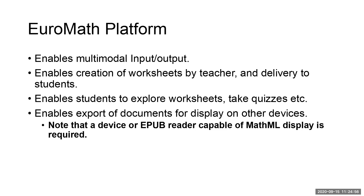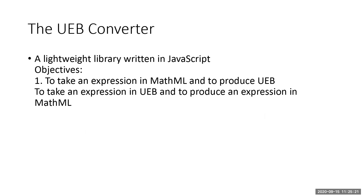We developed our own converter to take equations in the form of MathML — a standard used to render printed mathematics on a web browser or other devices, and used in MathType among other things. The UEB converter takes an expression in MathML, puts it through some functions and code in the background, and produces an expression in UEB braille. The same library also works in the other direction: it takes an expression in UEB and produces the equivalent in MathML, which can then be displayed in printed form.